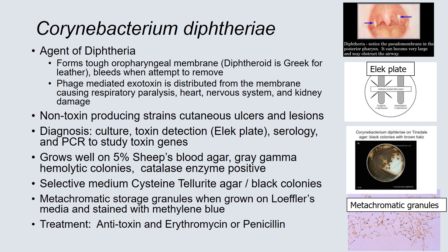C. diphtheriae forms very tough oropharyngeal membranes on the throat area that are very difficult to remove and will bleed when removal is attempted. Diphtheroid is of course Greek for leather. These very tough membranes are produced from a phage-mediated exotoxin. It's distributed from this membrane, causing respiratory paralysis, heart, nervous system, and kidney damage. Non-toxin-producing strains of C. diphtheriae do exist and are found in cultures of ulcers and lesions, mostly in homeless populations.